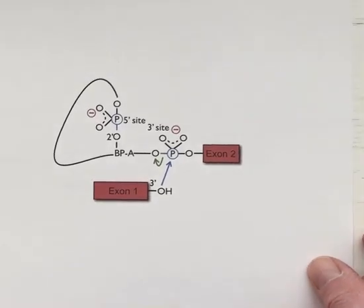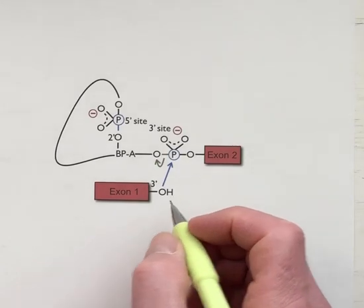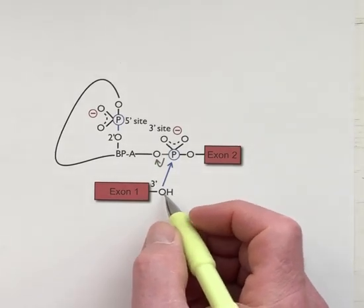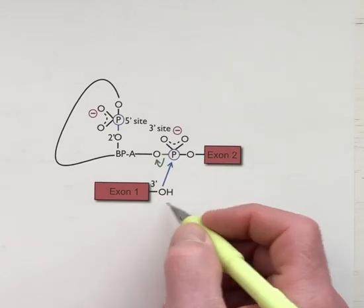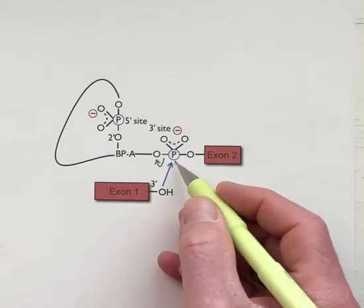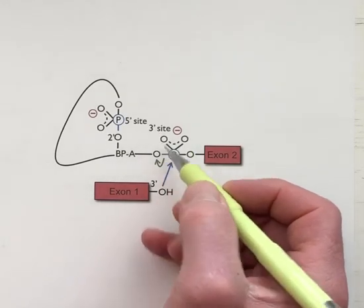After that first transesterification reaction we now have a new three prime hydroxyl group. This was the leaving group in the first reaction and now it becomes the nucleophile in the second reaction attacking the three prime site of the intron.